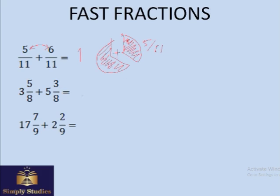Similarly, 5/8 plus 3/8 gives you one whole, since 3 plus 5 equals 8. So the end result is 9. Here 17 plus 2 gives you 19, and the fractional part gives you 1, so it adds up to 20.